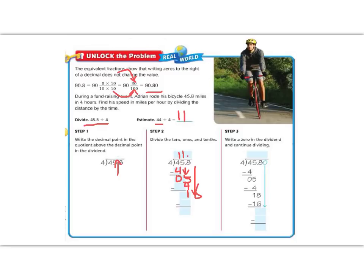4 goes into 18 4 times, which is 16. Subtract and we're left over with 2. Now you might think that this is where we're done, and we would say that it's 11.4 remainder 2, but we're actually not quite done. Because as you can see in step 3, we're going to add a 0 on the end after that 8, and we're going to keep dividing until we get to a 0 on the bottom. So we left off here at 18 minus 16 is 2.